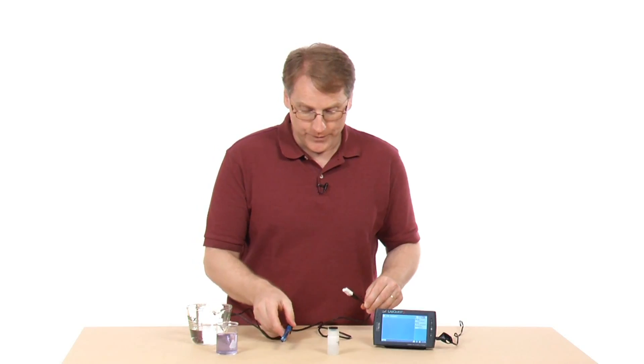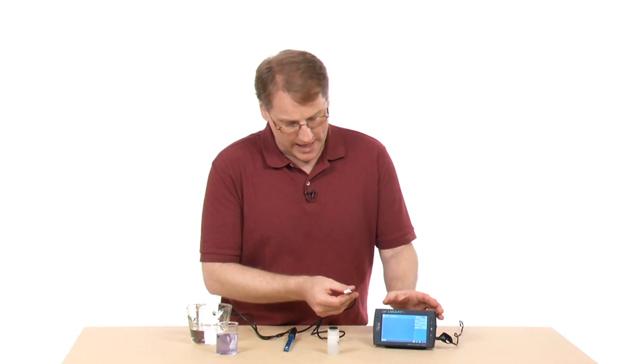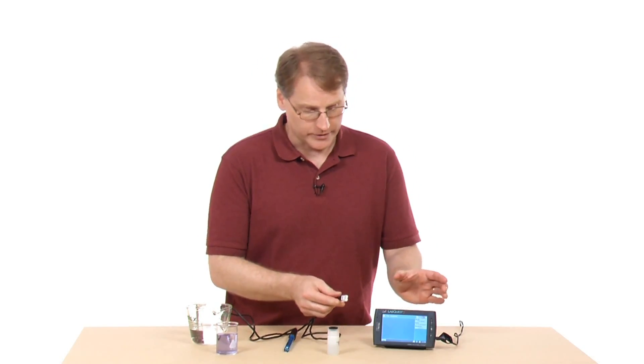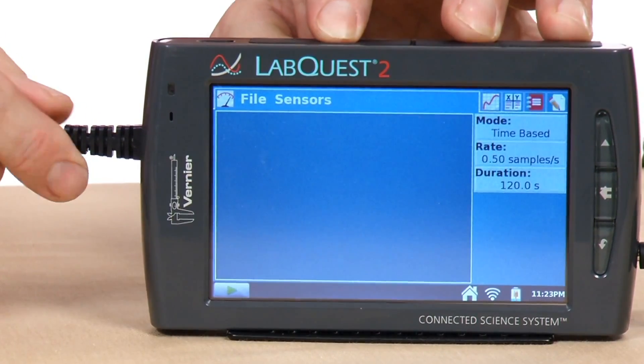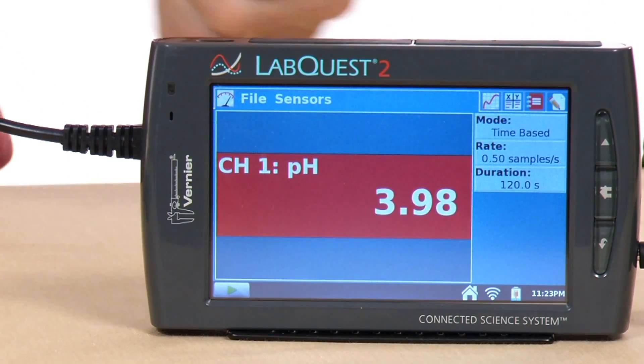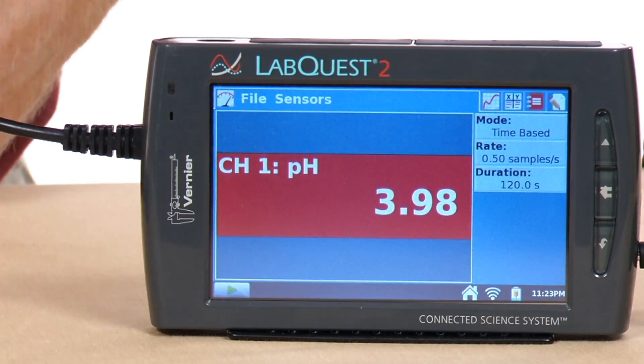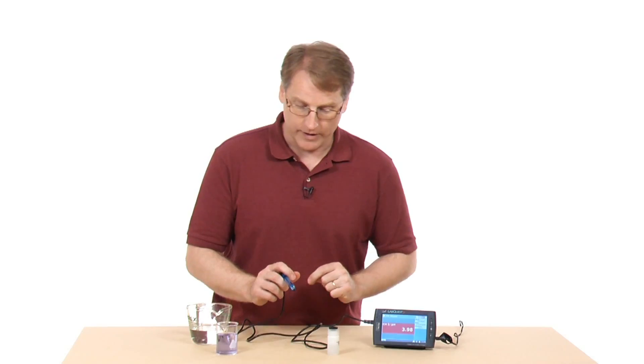The first thing I need to do is plug this into my LabQuest. It's an analog sensor, so it goes into one of the analog ports here. When I plug it in, I get my meter reading here, and it's close to the 4 where I had it in the solution before.